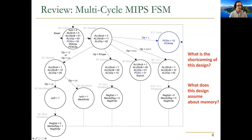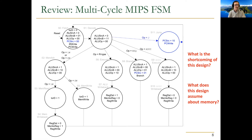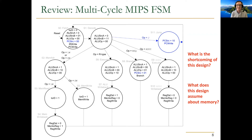We know how to design finite state machines now. You can use a ready bit from memory to indicate when to transition to the next state. In this pipeline lecture we're still going to assume memory is single-cycle, though we'll see that a pipelined processor can handle multi-cycle memory by stalling. Pipeline works best when you have single-cycle memory.